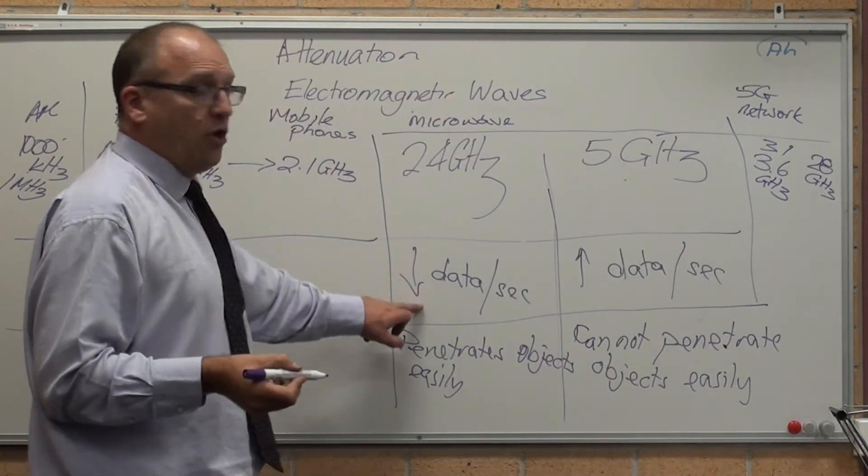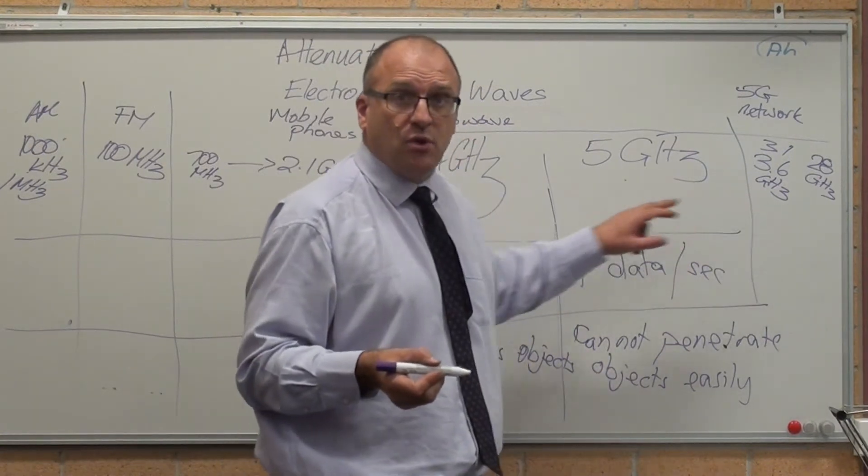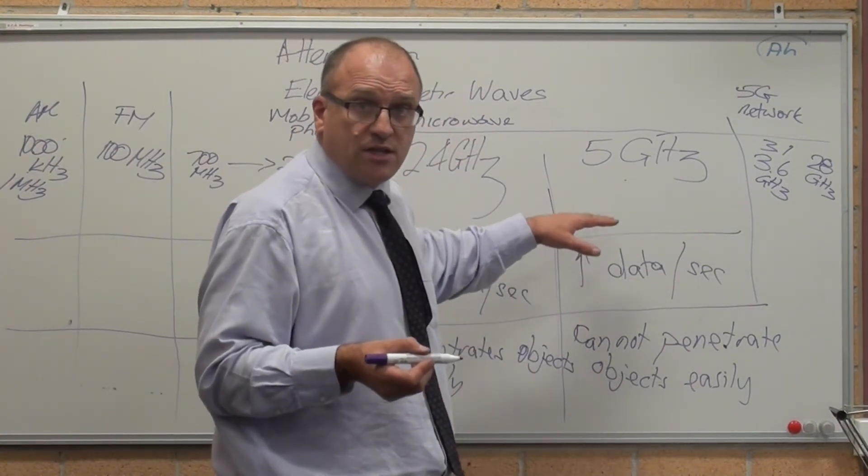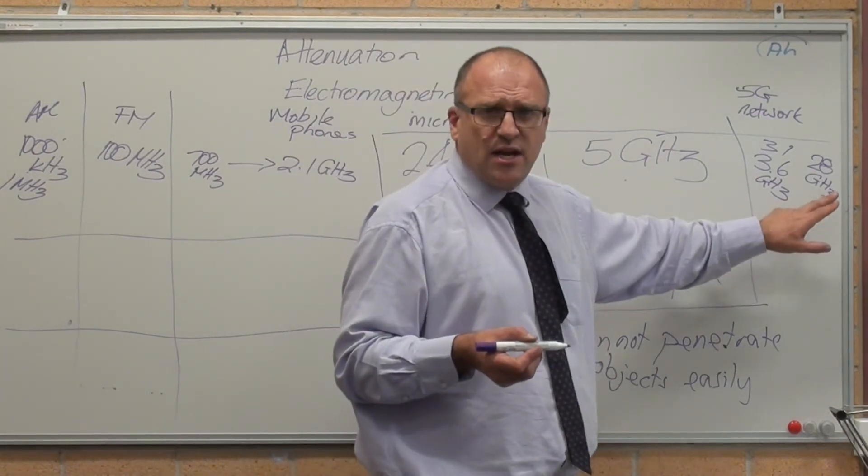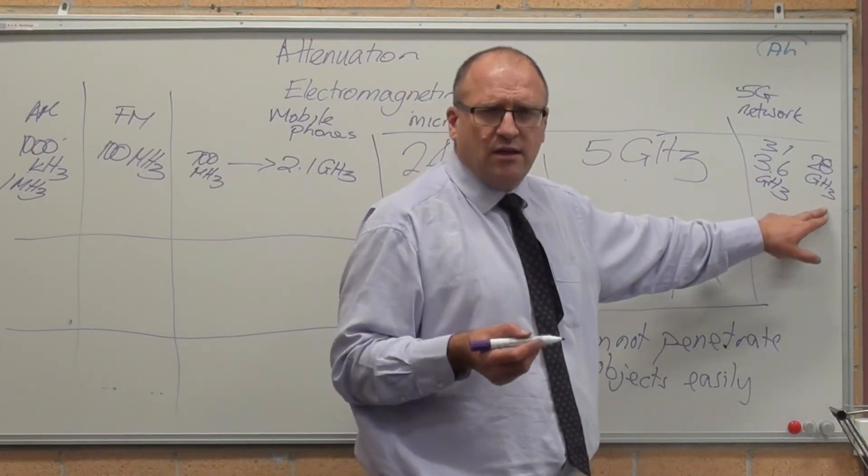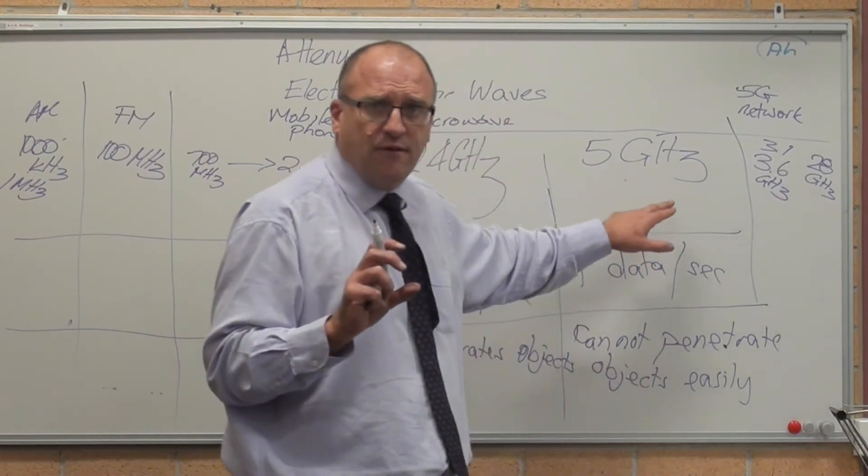If 2.4 carries less, 5 GHz carries more, 3.1, 3.6. It's approaching the carrying capacity of a 5 GHz network. Just imagine how much data you'll be able to carry when the carrier frequency is 28 GHz compared to 5.